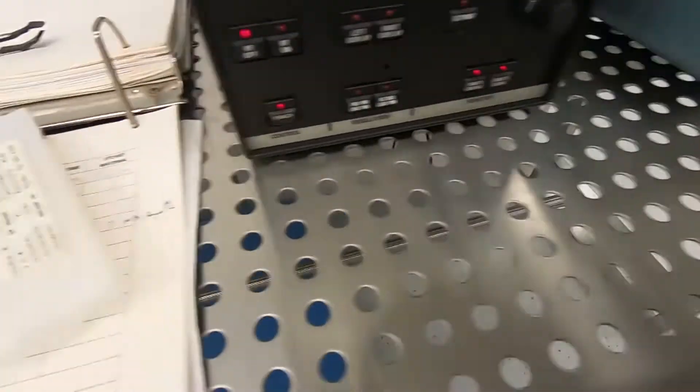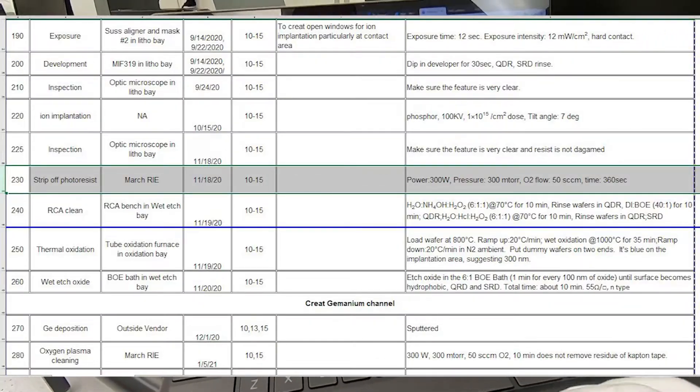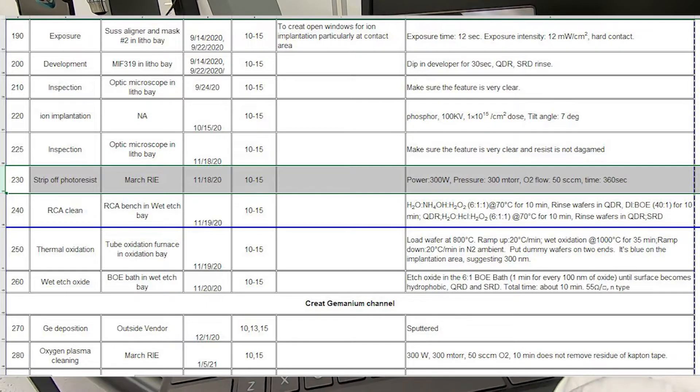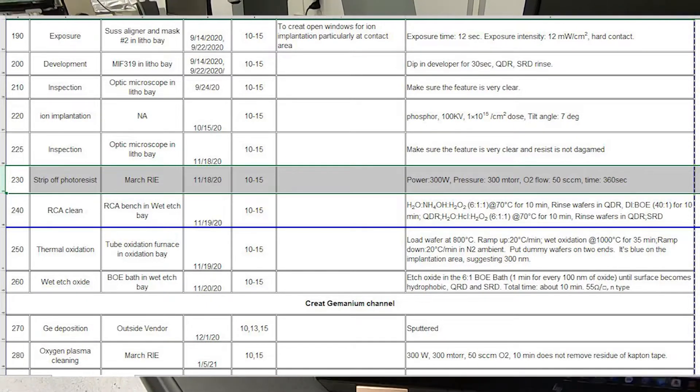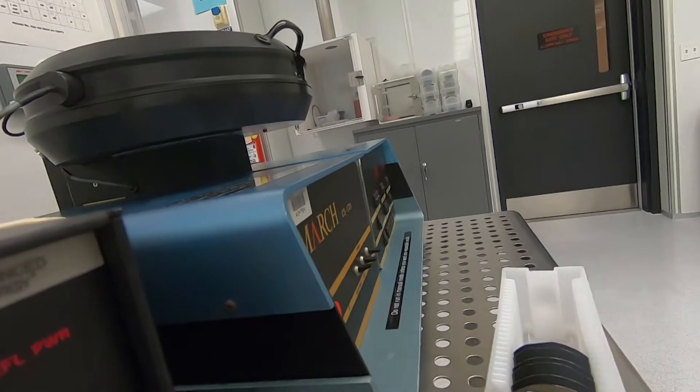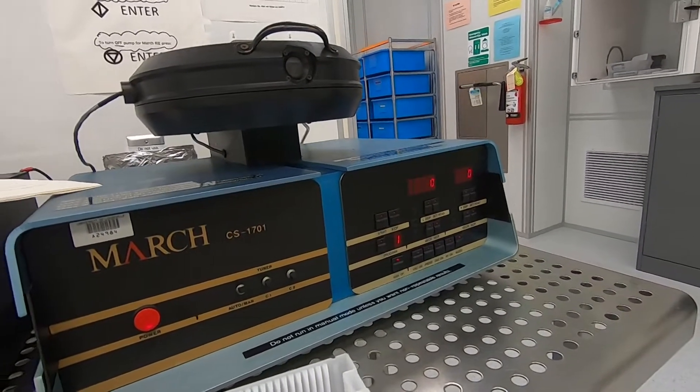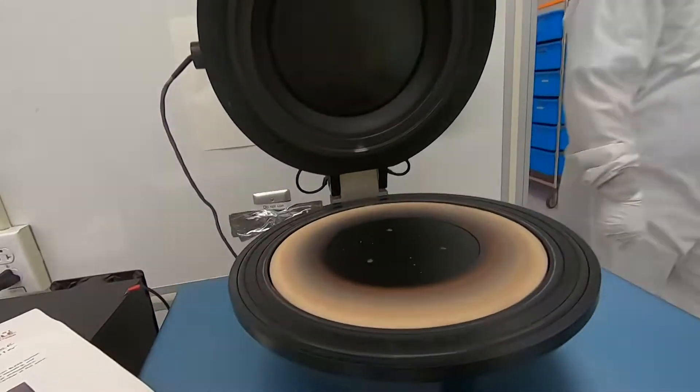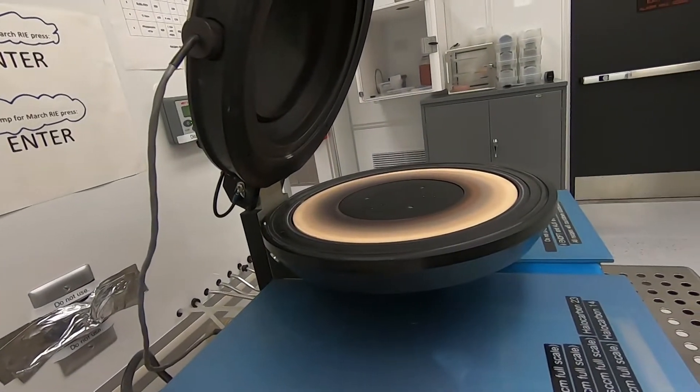So like I said, this is step 230 in the fab sequence for the traveler. There's the reactor, we're going to load the wafers.